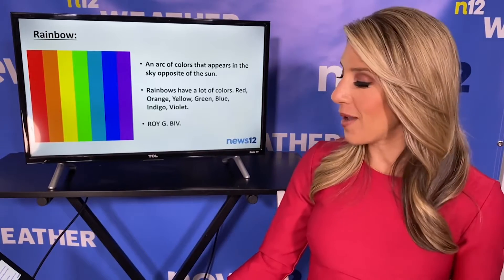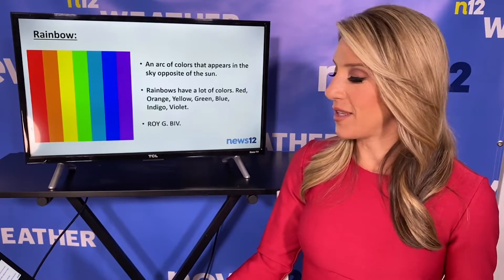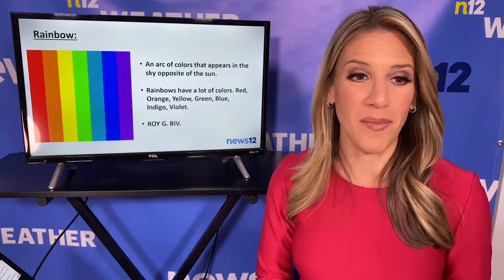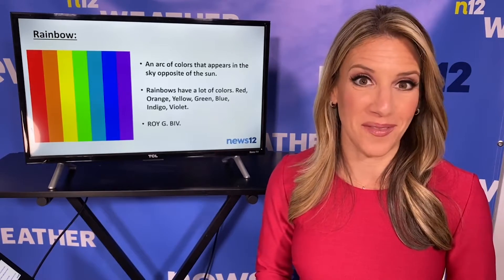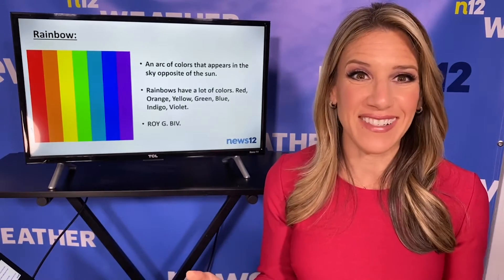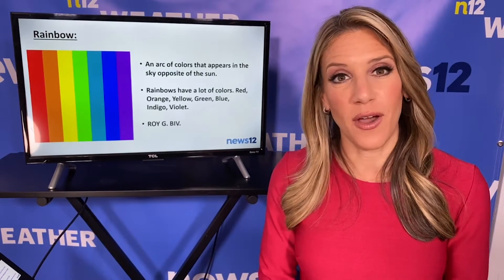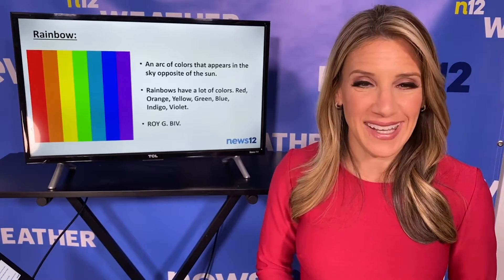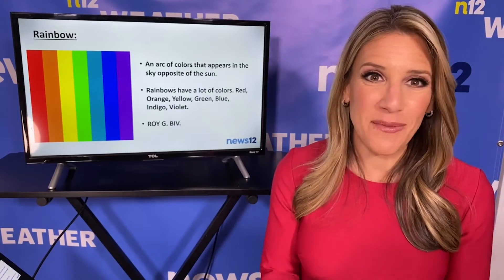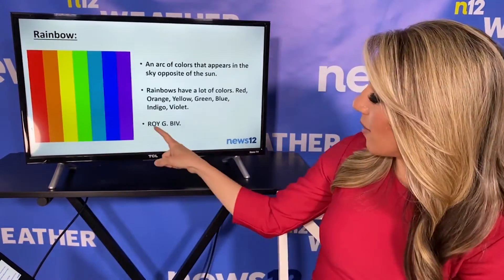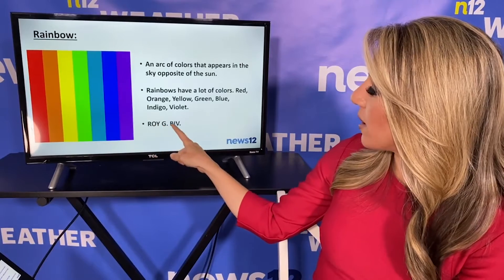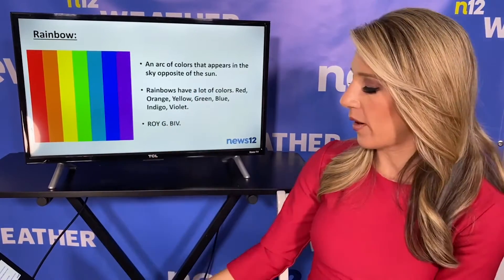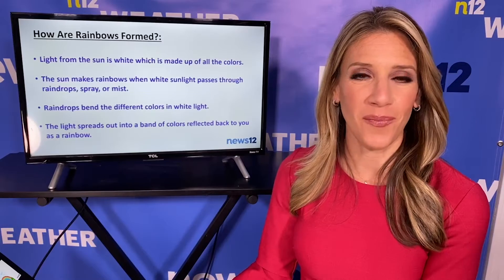What is a rainbow? A rainbow is an arc of colors that appears in the sky opposite of the sun. The rainbow is made up of a lot of colors: red, orange, yellow, green, blue, indigo, and violet. An easy way to remember that is the name Roy G. Biv, where every letter in that name stands for the colors of the rainbow.